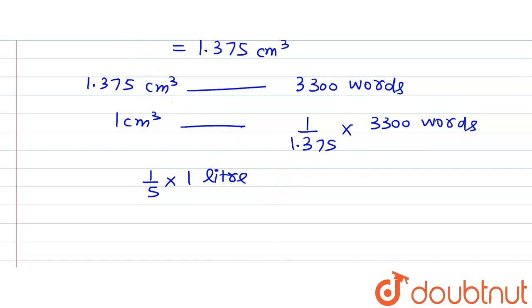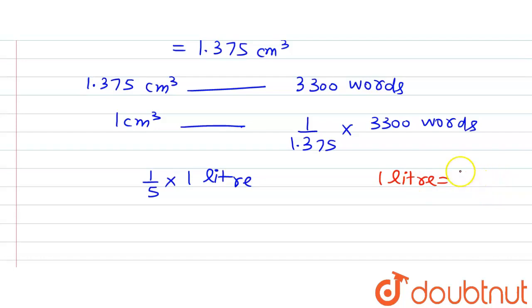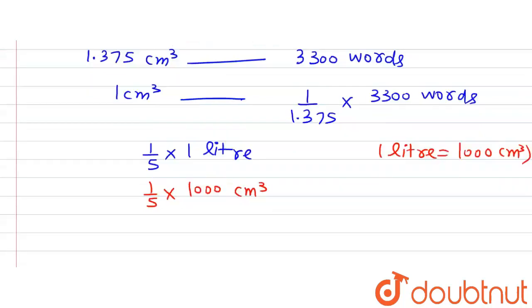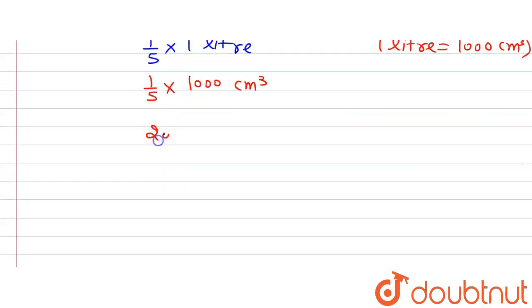We are given one fifth of a litre of ink. We know that 1 litre equals 1000 cm³. So one fifth of a litre equals (1/5) × 1000 = 200 cm³. This is the total volume of ink available.